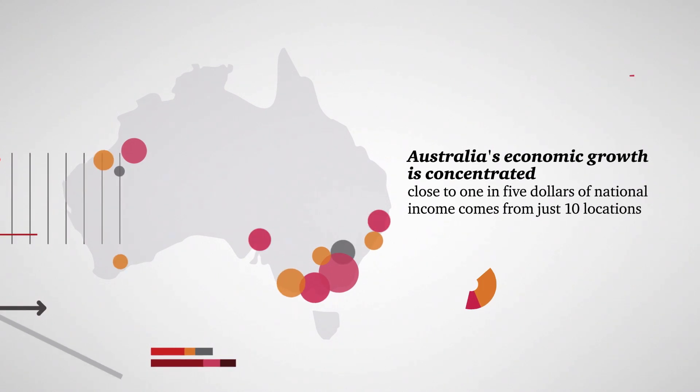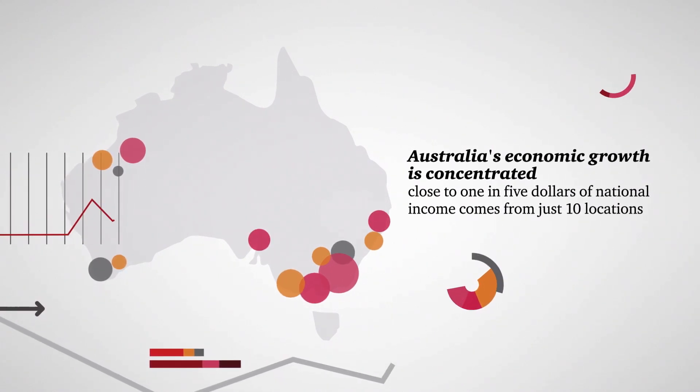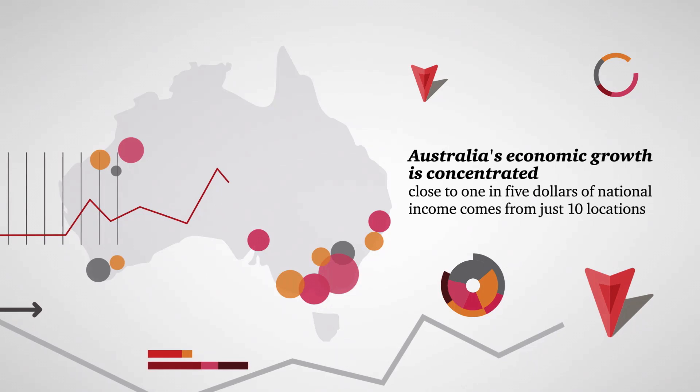Australia's economic growth is concentrated. Close to one in five dollars of Australia's national income comes from just ten locations.